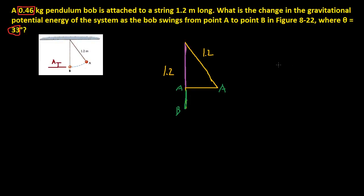And we can just do MGH, where H is this distance here. So this is going to be H, and that's going to be equal to our potential energy, which is going to be the same thing as the change in gravitational potential energy as the pendulum bob goes from A to B.